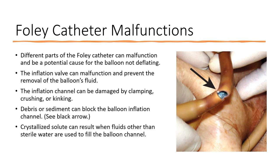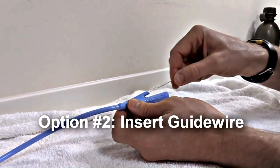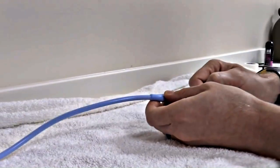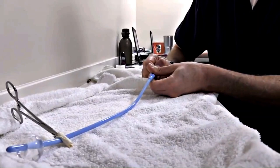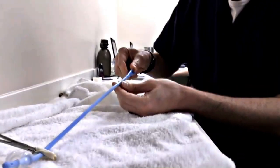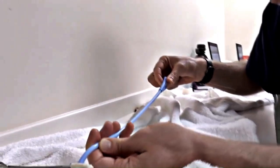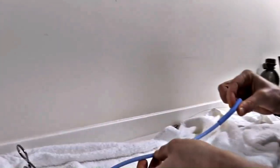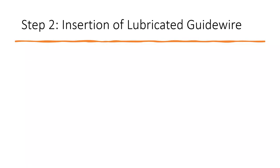Crystallized solute can result when fluids other than sterile water are used to fill the balloon channel. The next step would be to take a guide wire — I took this guide wire from a small valve feeding tube. We're going to advance that guide wire. It is a tight fit, but it is advancing. In general, you're supposed to use central line guide wires; this one from a feeding tube is a woven wire.